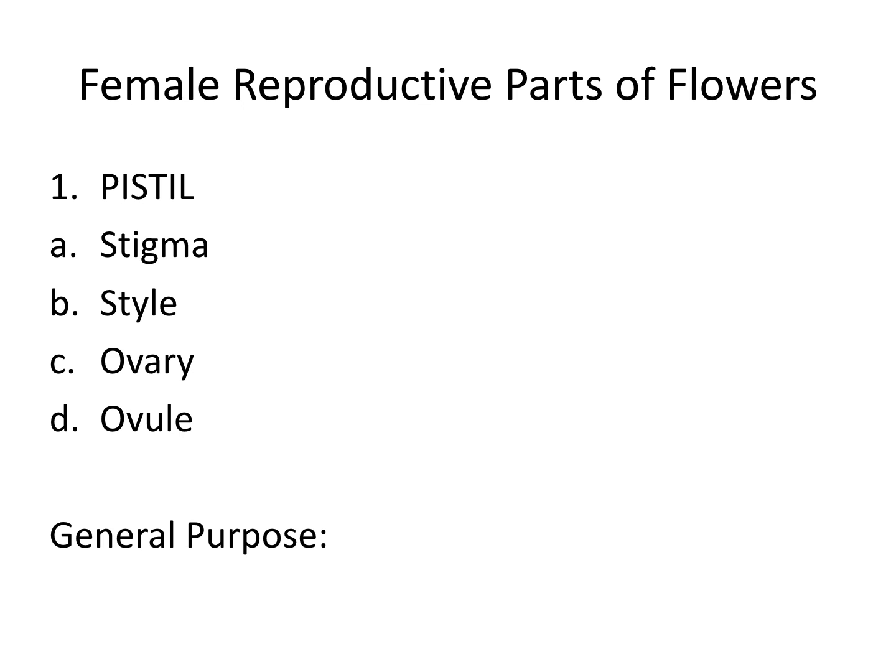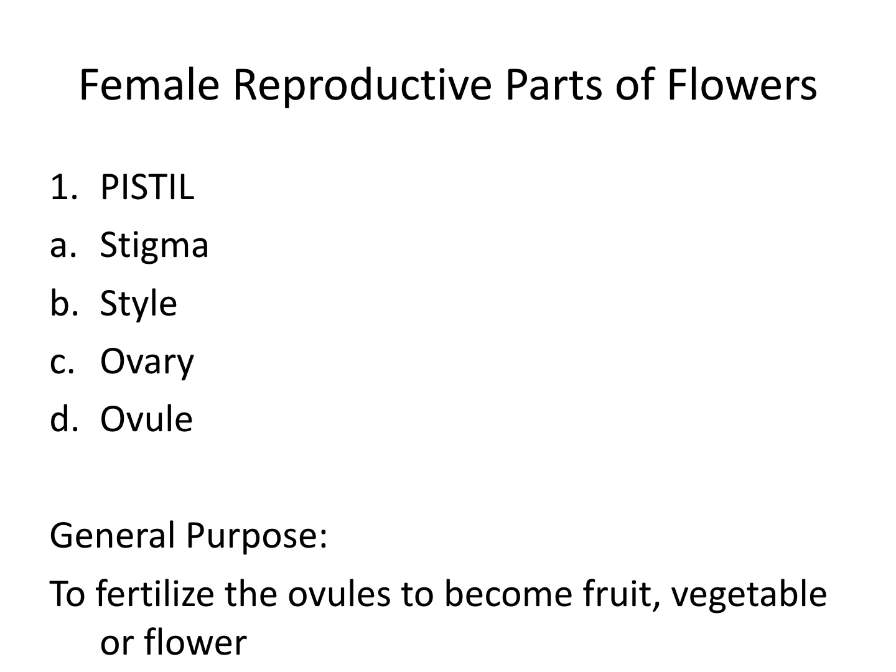Some of these seem familiar because they are just like females. We talked in class about what each of these do, but they all have a general purpose. The male's job was to produce and give off pollen. The female's job is to fertilize the ovules to either become a fruit, a vegetable, or a flower. Plants like to flower — even vegetables like cucumbers flower before they become a cucumber. The seeds develop into this fruit, vegetable, or flower in order to reproduce later.